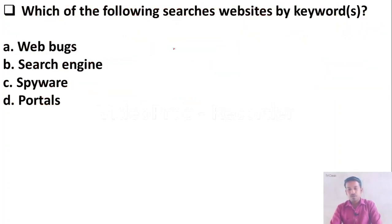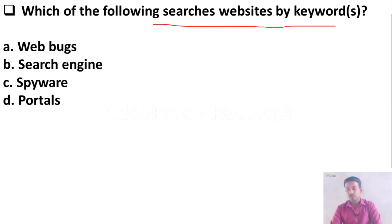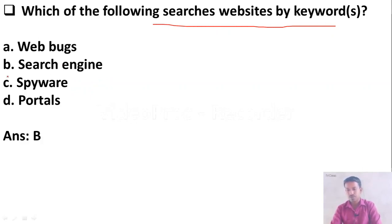Which of the following searches websites by keywords? Option A: Web Bugs, Option B: Search Engine, Option C: Spyware, Option D: Portals. The answer is Option B, Search Engine.